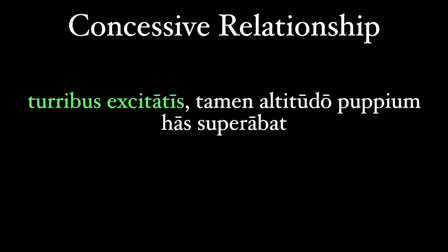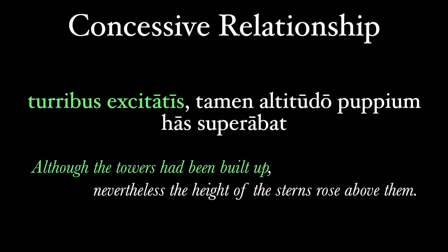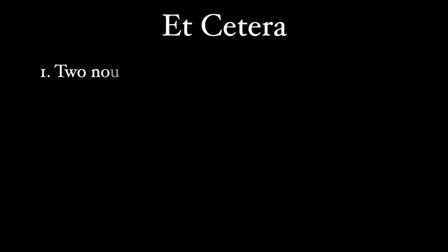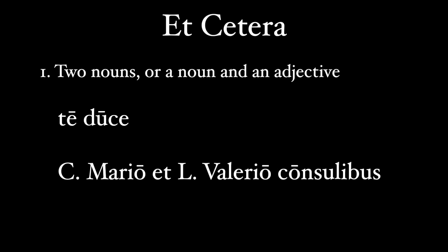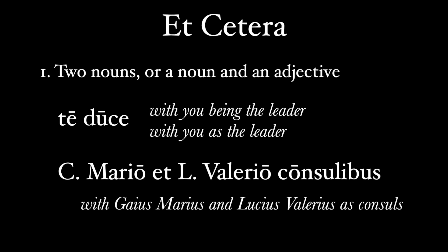For example: 'Turribus excitatis, tamen altitudo puppium has superabat' — 'With the towers built up, nevertheless the height of the sterns rose above them.' The presence of 'tamen' (nevertheless) in the main clause signals that we should translate the ablative absolute as 'although the towers had been built up.' Also, sometimes you'll see two nouns together or a noun with an adjective, like 'te duce' or 'Gaio Mario et Lucio Valerio consulibus.' These can be ablative absolutes where the second noun replaces the participle — read in the present participle of 'esse' (being): 'with you as the leader' or 'with Gaius Marius and Lucius Valerius as consuls,' which is the standard Roman way of noting the year in literature.